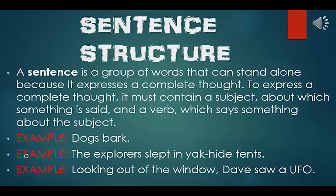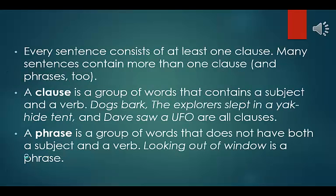Now on to sentence structure. A sentence is a group of words that can stand alone because it expresses a complete thought. To express a complete thought, it must contain a subject — about which something is said — and a verb — which says something about the subject. Example: Dogs bark. Example: The explorers slept in yak-hide tents. Example: Looking out of the window, Dave saw a UFO. Every sentence consists of at least one clause. A clause is a group of words that contains a subject and a verb. A phrase is a group of words that does not have both a subject and a verb — 'looking out of the window' is a phrase.